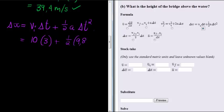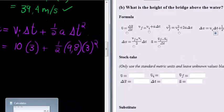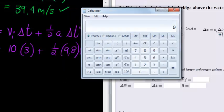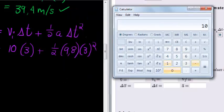Everything positive this time because nothing is upwards, times 3 squared. We use a calculator and get that answer very easily. 10 times 3 plus 0.5 times 9.8 times 3 squared.